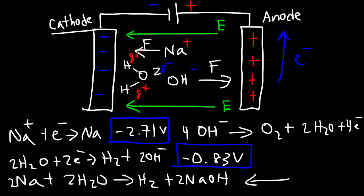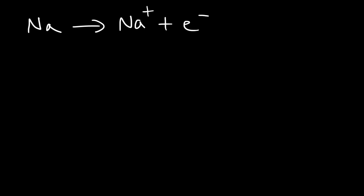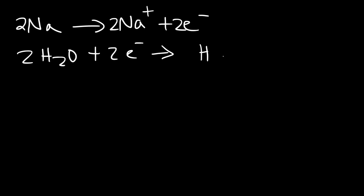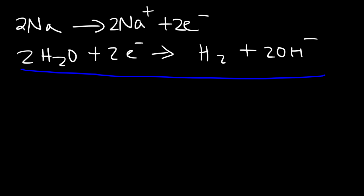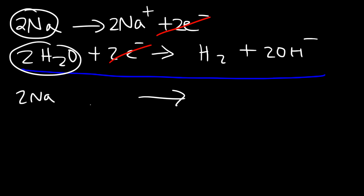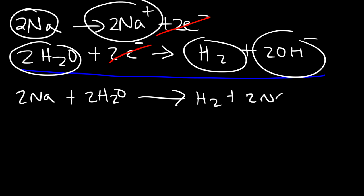If sodium were produced at the cathode, it would immediately give up its electron to become Na⁺, and then water would pick up those electrons and be reduced to hydrogen gas and hydroxide. Combining these two reactions and canceling the electrons gives: Na + H₂O → ½H₂ + NaOH. That's why sodium will not persist at the cathode — if it did form, it immediately reacts with water, regenerating the Na⁺ cation.